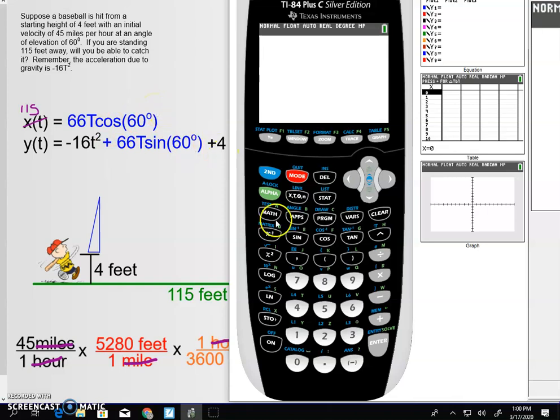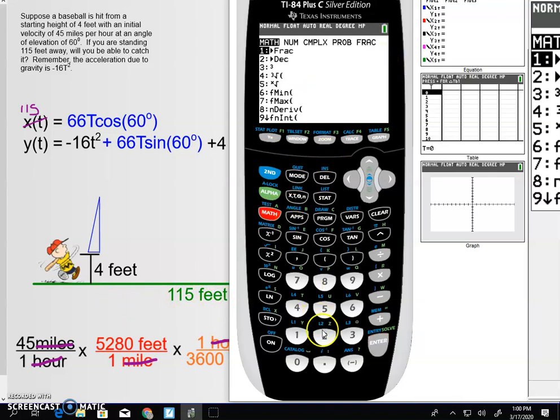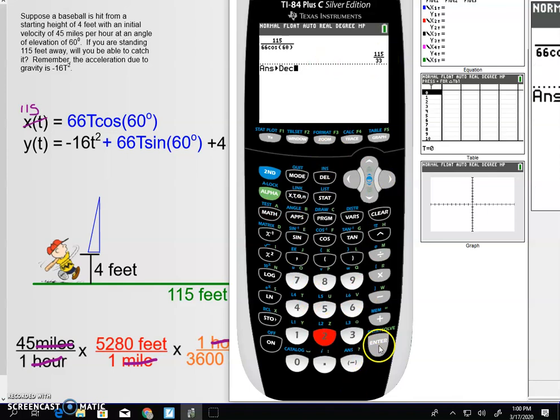I think if I take that 115 and divide it by 66 times the cosine of 60, that's going to tell me how many seconds this ball took to go 115 feet. And I see it's that. And if you want, you can convert that to a decimal. It looks like it's just about three and a half seconds.